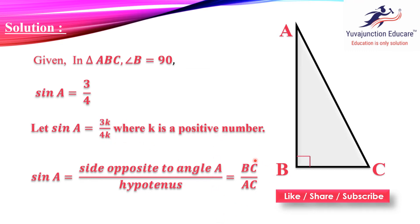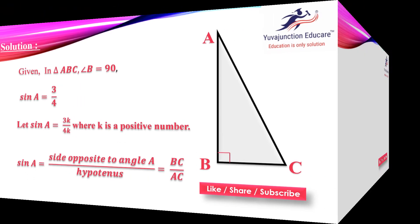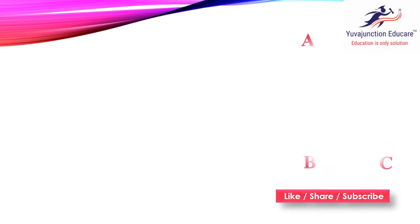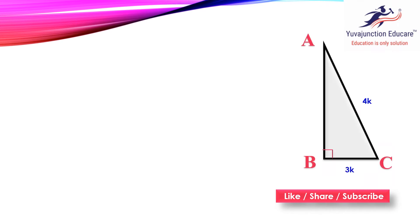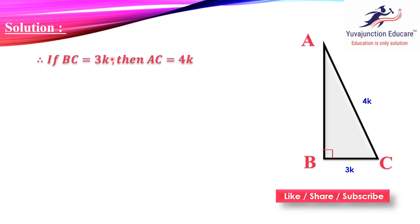So the two ratios will be equal: BC upon AC = 3k upon 4k. By comparing these two ratios, we get BC = 3k and AC = 4k.